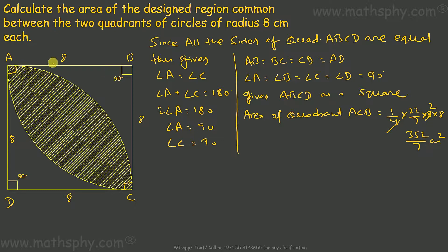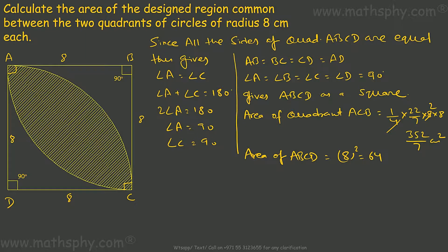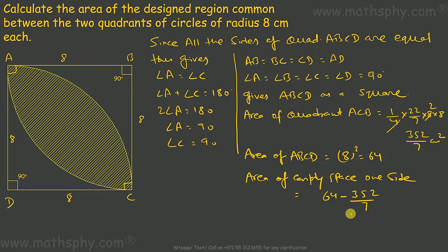From the area of this square, if I take off the area of one quadrant, I'll get the empty space on one side. Area of square ABCD is 8 squared, which is 64. So area of empty space on one side equals 64 minus 352/7, which gives 448 minus 352 equals 96 over 7 cm squared. This empty space is 96 over 7 cm squared.